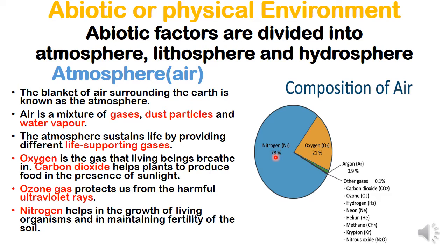Nitrogen is 78%, oxygen is 21%, argon is 0.9%, and other gases are 0.1%. This balance helps us survive here. The atmosphere sustains life by providing different life-supporting gases. Because of a perfect percentage balance, the atmosphere supports life sustenance.